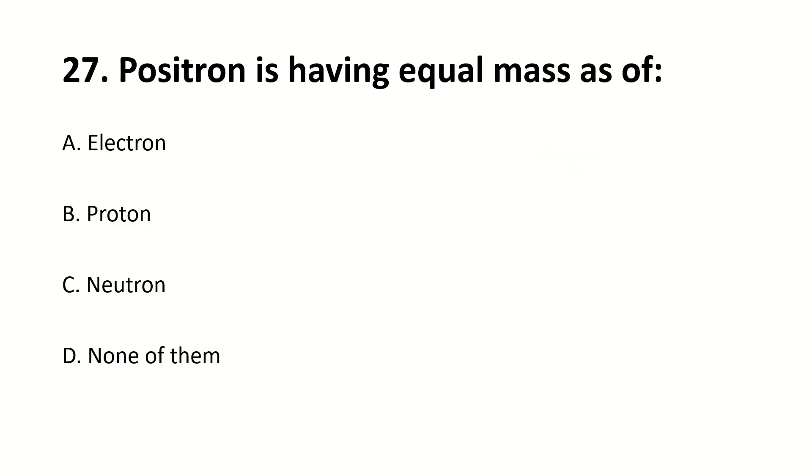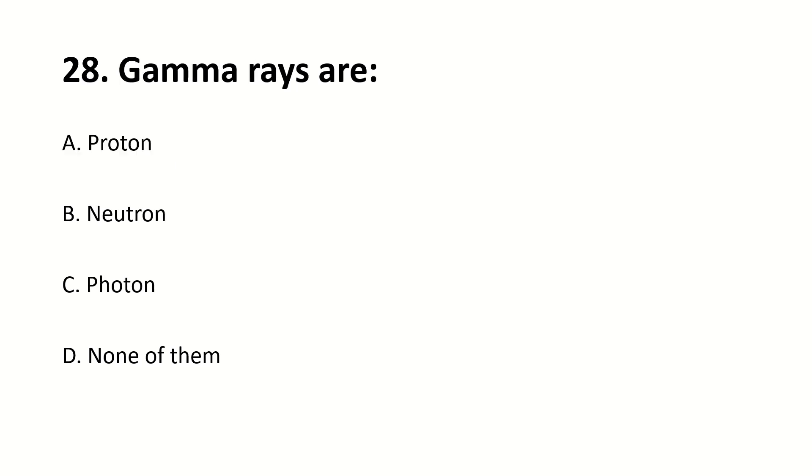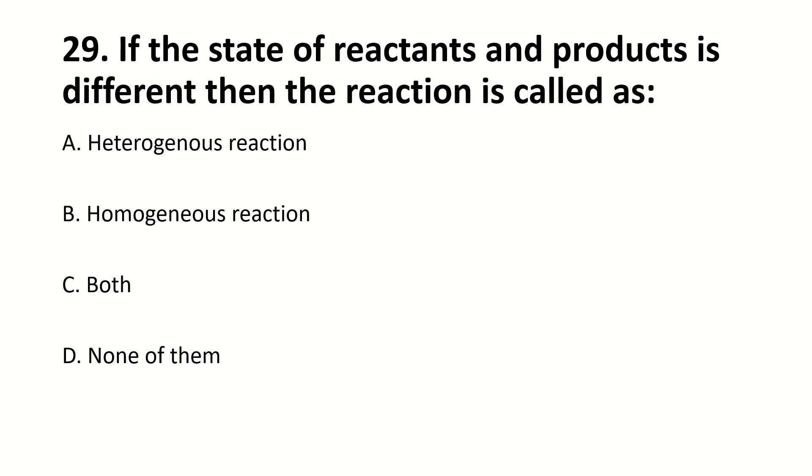Positron is having equal mass as electron. Gamma rays are photons. If the state of reactants and product is different than a reaction, it's a heterogeneous reaction.